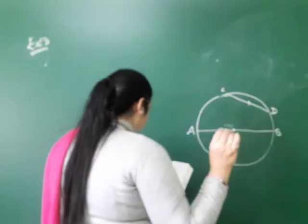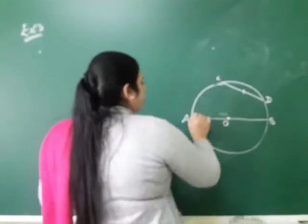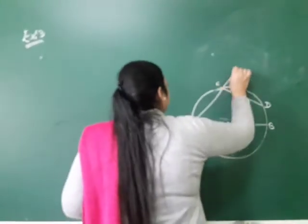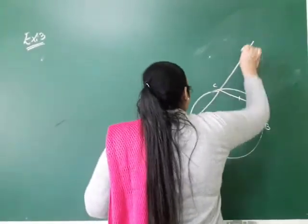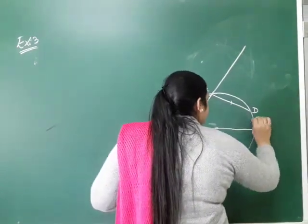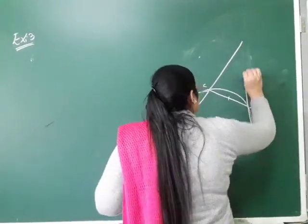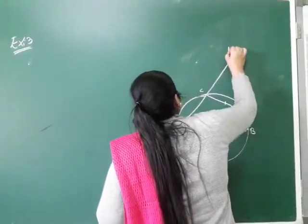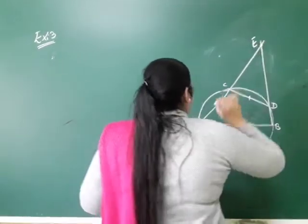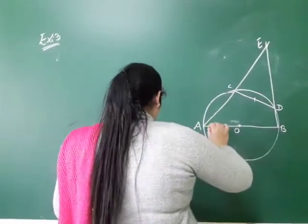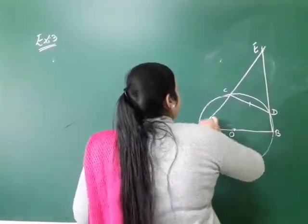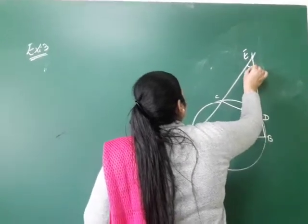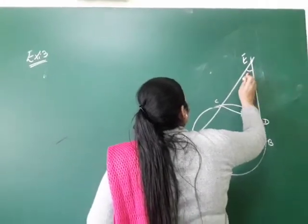After that, AC and BD are extended and intersect at point E. You have to find that angle AED — this angle — is 60 degrees.